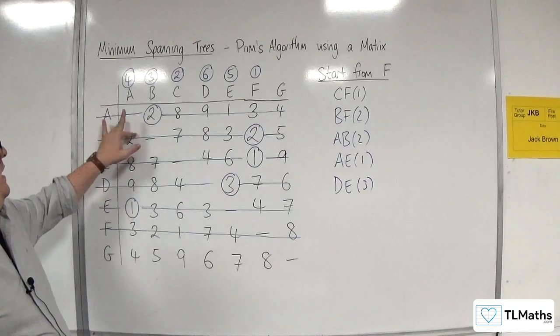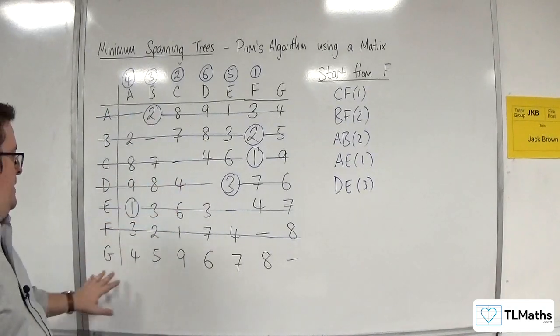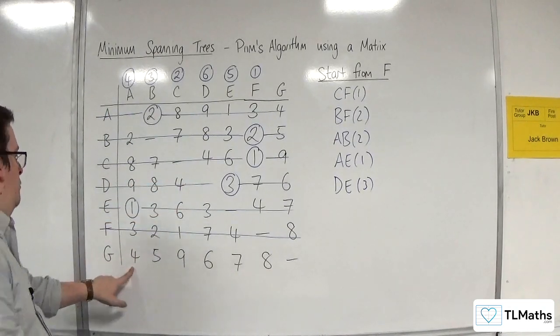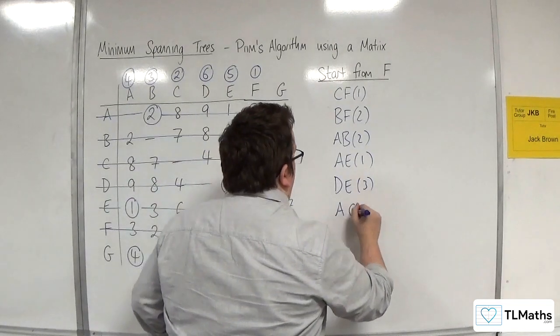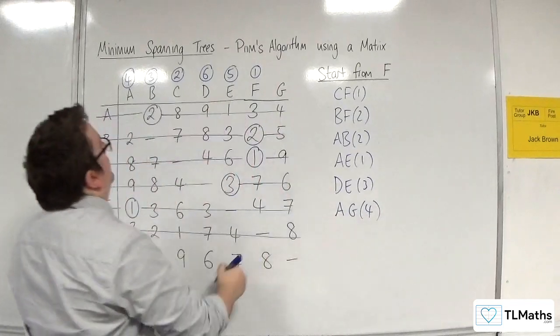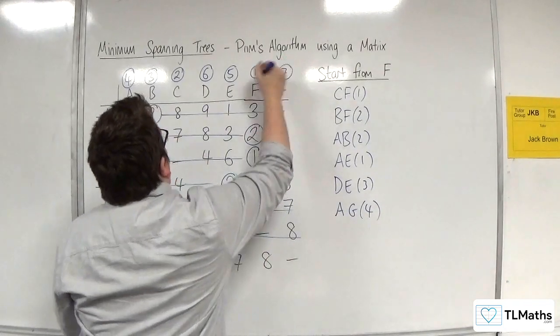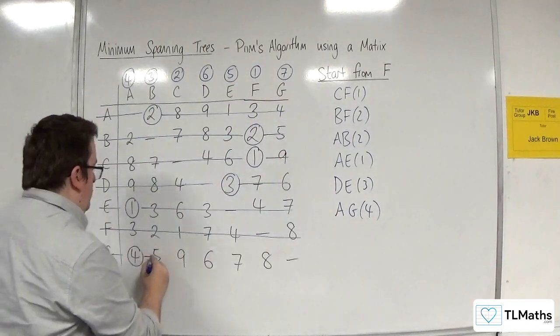Now we're looking down A, B, C, D, E, and F. The next shortest would be the 4. A is connected to G. G gets the number 7. And we delete the rest of the row.